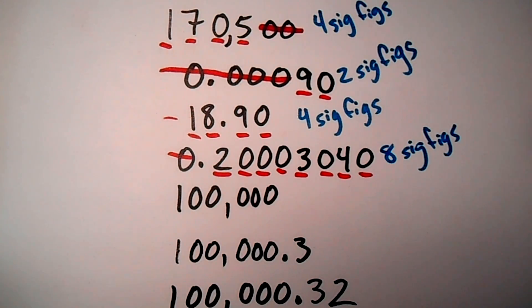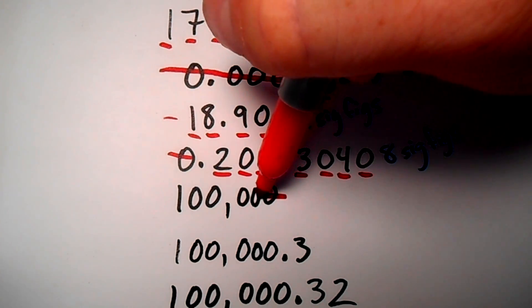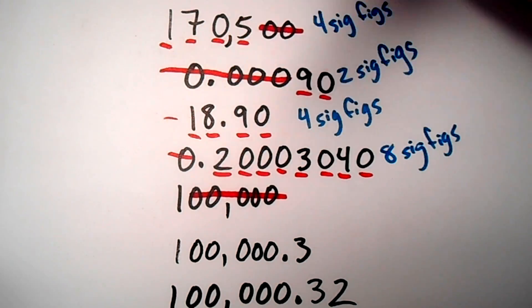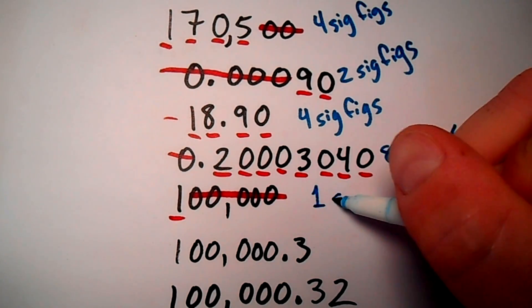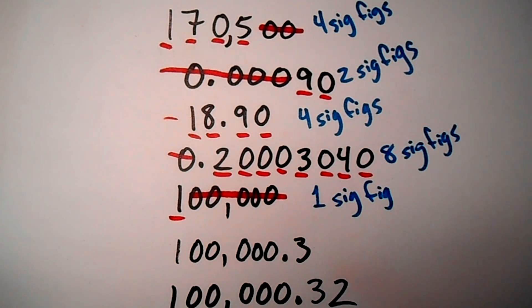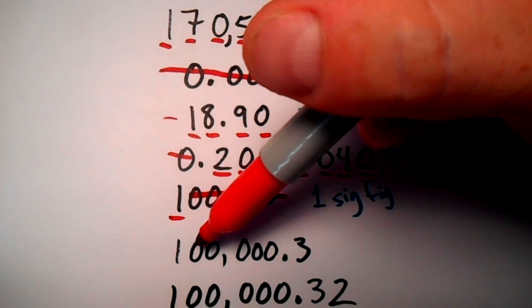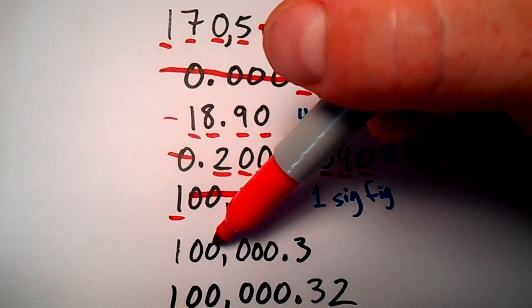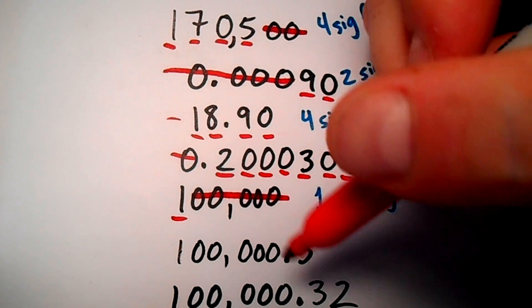For the number 100,000, the decimal is absent so we start on the Atlantic side — all of those zeros are just placeholders, so we only have one sig fig. For the next one, there's a decimal present, and the decimal point here is showing that all of this was measured out — it truly was — and we've measured out to the tens place too, so every single one of these digits is significant.